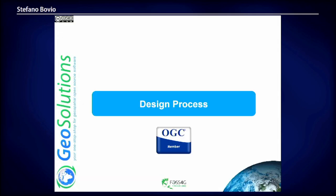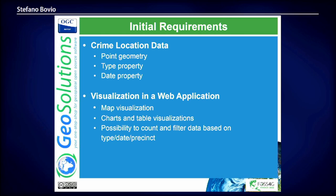Let's start from the design process — how we started thinking and working on this specific use case. We had some initial requirements: crime location data composed of a geometry point, the type of crime (which we needed to filter later in the application), and the report date. As a result, we needed to visualize this information inside a map and display additional data with charts and tables, and also be able to filter this data based on the properties inside the crime location dataset.